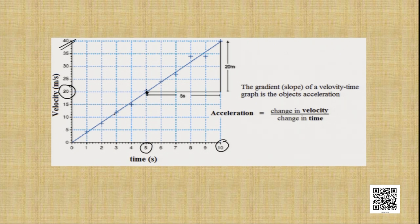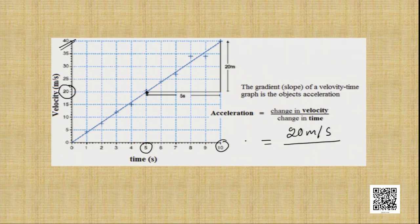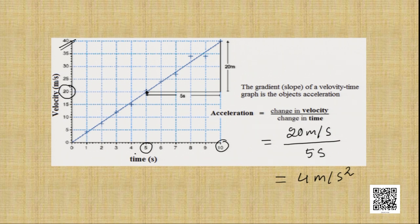The initial velocity at the 5th second is 20 meters per second and the final velocity at the 10th second is 40 meters per second. The difference is 40 minus 20 = 20 meters per second. That change has taken place over a duration of 5 seconds. So the acceleration equals 20 meters per second divided by 5 seconds, which gives us 4 meters per second squared. The object executing uniform acceleration has an acceleration of 4 m/s².